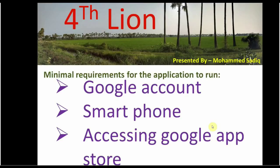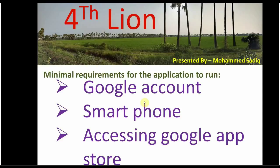We will now see how this app is installed, what the minimum requirements are, how it is going to benefit users, what the drawbacks are, and how this application can be more realistic. This app was launched in June by our Honourable Chief Minister Chandrababu Naidu for the safety and security of Vijayawada citizens. The minimal requirements to run the Fourthline app are a Google account, a Gmail account, and a smartphone.